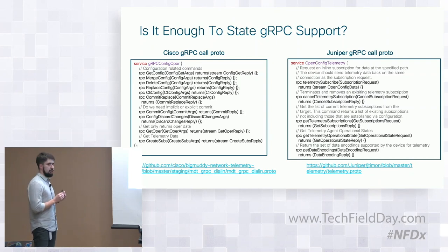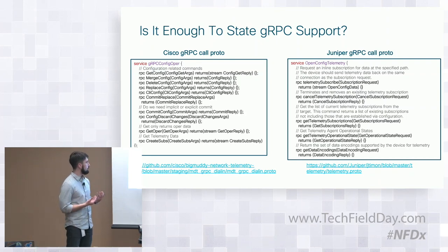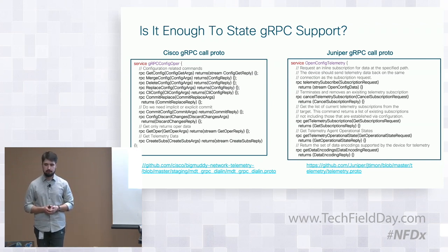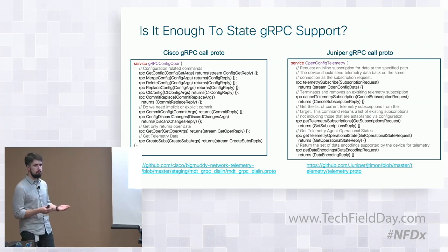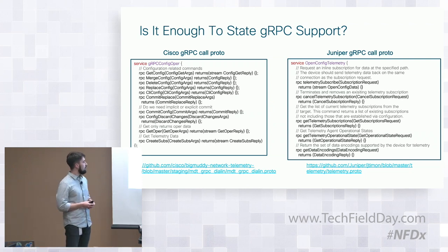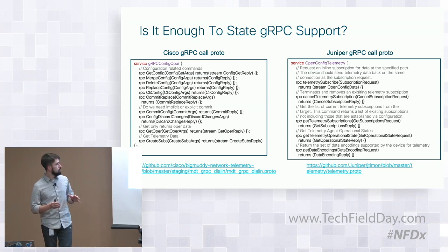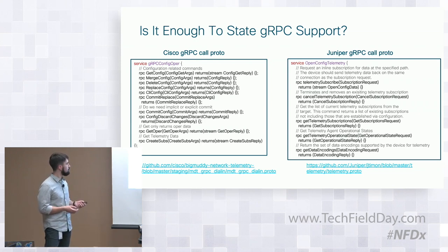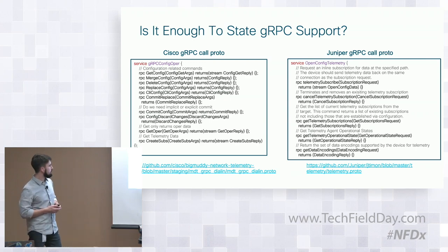When it comes to gRPC support, we need to be clear that it may be a different thing for different vendors. For example, if we take a look at gRPC config operations, they have different methods and different signatures. It looks like both vendors support gRPC, but the nuances are hidden in the details of implementation. So it's not easy to normalize all the messages coming from a multi-vendor setup, and we need to be careful when we receive gRPC data.